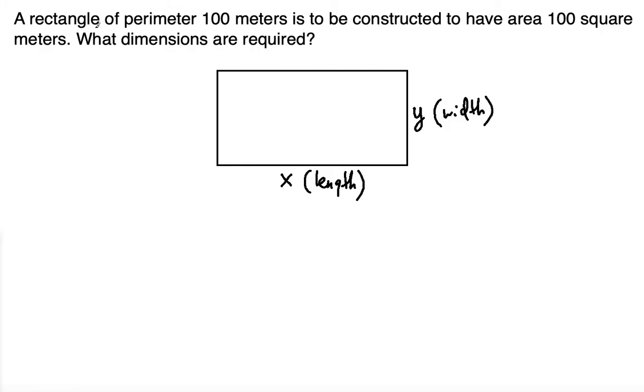We're told that the rectangle of perimeter 100 meters is to be constructed. The perimeter is 100 meters. Perimeter means the sum of all sides. Notice that this is also x and this is also y, so there are two x's to be added and two y's to be added to give us the total of 100.